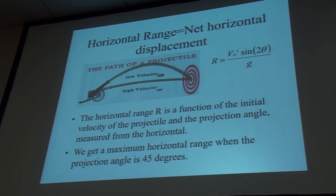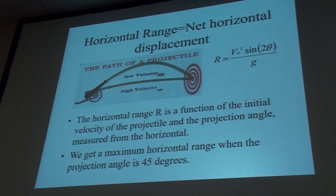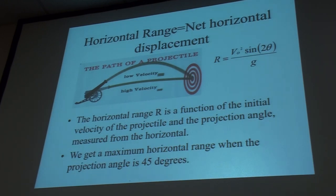Next I'd like to take a look at the expression for the horizontal range. I'm going to derive this expression that you see up on the data projector: v₀ squared sine of 2θ over g. This works for any problem where the mass lands at the same height from which it is released. This will also give us a feeling for how the horizontal range depends on angle and how we can figure out the maximum horizontal range by giving it the right projection angle.